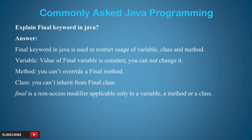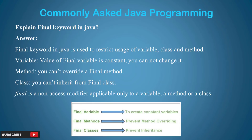For example, if I have declared x equal to 5 as a final variable, no matter what calculation you do in the entire program, you cannot change that variable. It is a constant variable. Next, you cannot override a final method — you cannot change the method. Final class means you cannot inherit it. Final is not an access modifier; it is applicable only to a variable, a method, or a class.